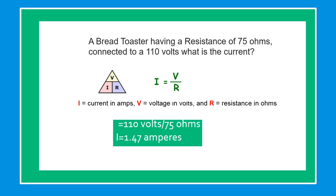In our example problem, a bread toaster having a resistance of 75 ohms is connected to 110 volts. What is the current? Using Ohm's Law, I equals current in amps, V equals voltage in volts, and R equals resistance in ohms. Our voltage is 110 volts divided by 75 ohms. Our current is 1.47 amperes.